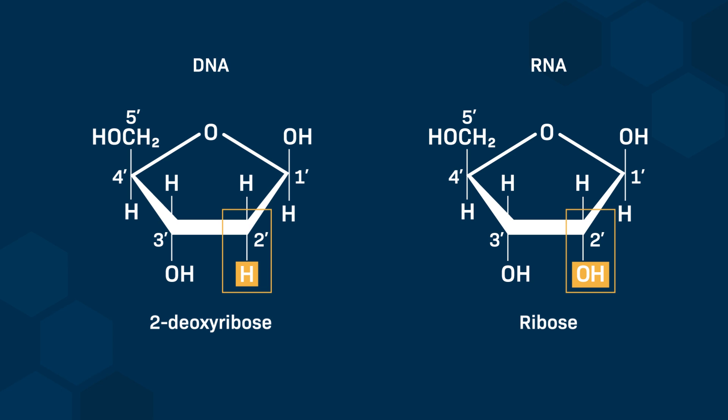Both ribose and deoxyribose have a hydroxyl group on their carbon-3'. This is critical for the polymerization of nucleotides into nucleic acid because they're part of the synthesis of the 3' to 5' phosphate-ester linkage.